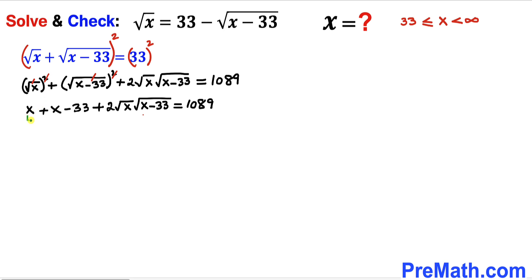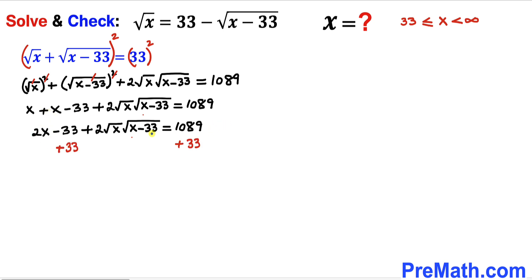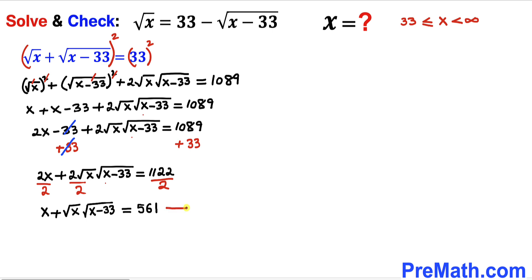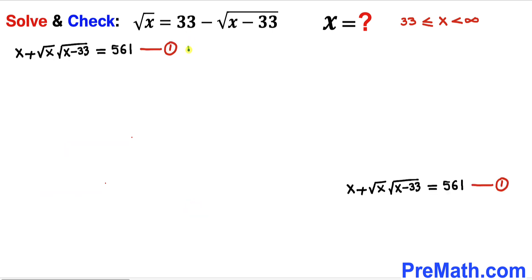Combining the like terms x + x gives us 2x. Next, I add 33 to both sides so the −33 cancels, giving 1089 + 33 = 1122. Then I divide every term by 2 to simplify. We arrive at: x + √(x)·√(x−33) = 561. I will call this equation number one.